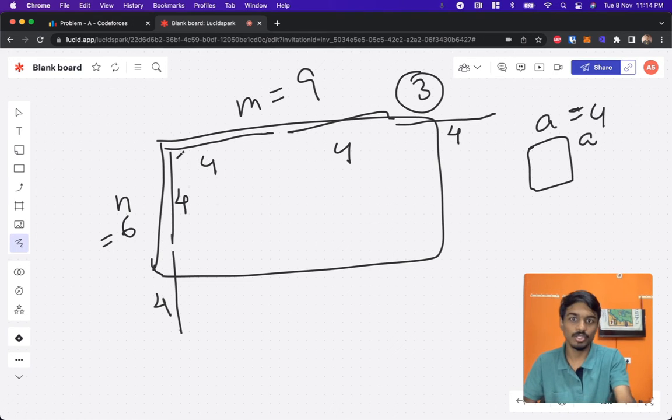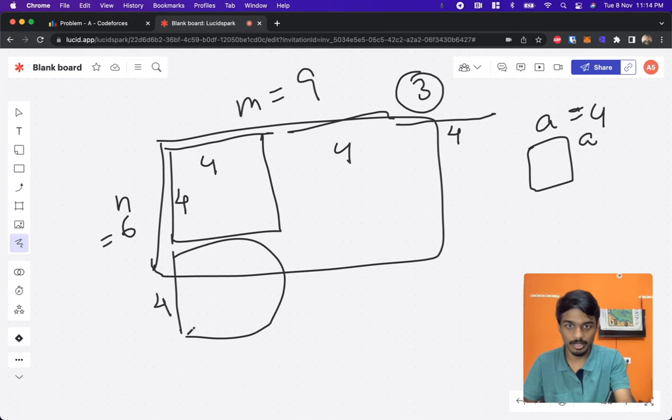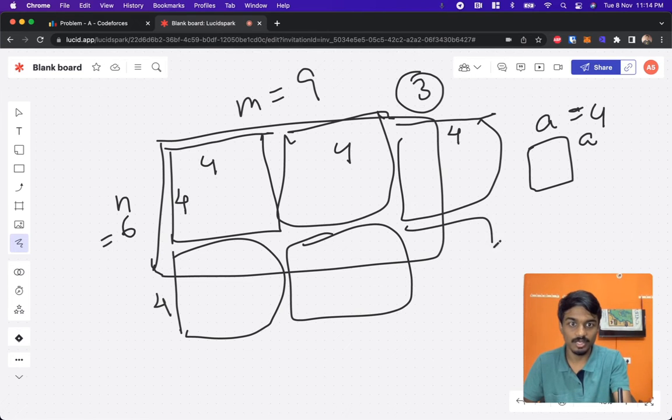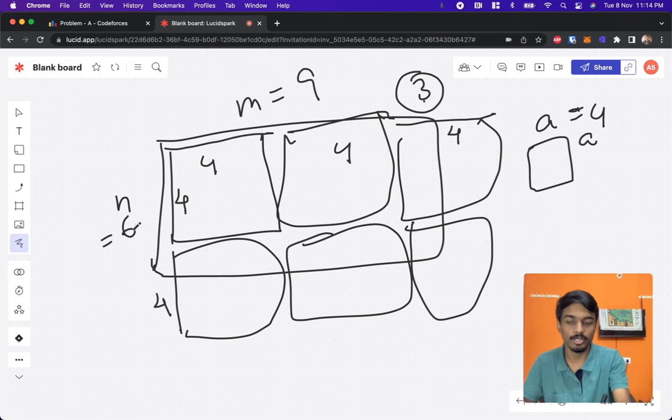So what is the total area if we merge everything? The total area will be six squares. How did I get it? This is the product of three into two, so there are two squares.